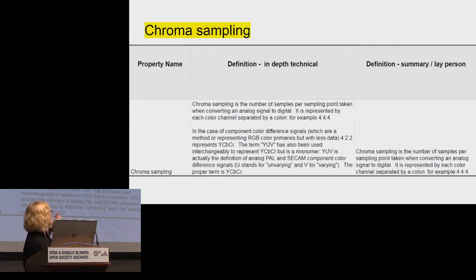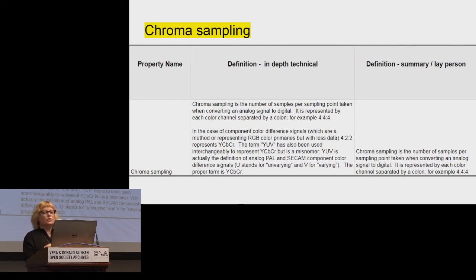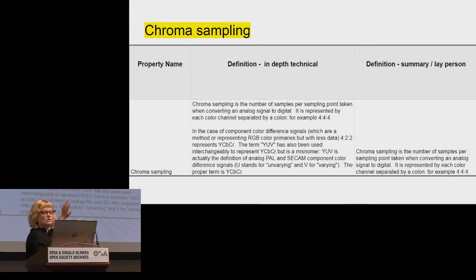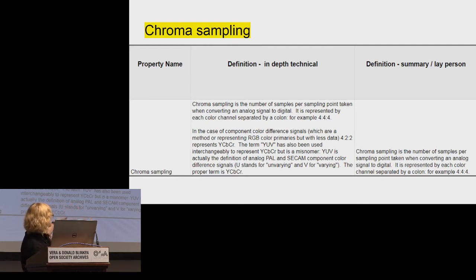Here's an example of the chroma sampling entry. Thinking back to when I was first starting — if you see 4:2:2 somewhere, what exactly does that mean? We have a more in-depth technical section discussing the difference between YCbCr and YUV, and then a summary definition explaining what it means when converting, and what the color channel separation is.